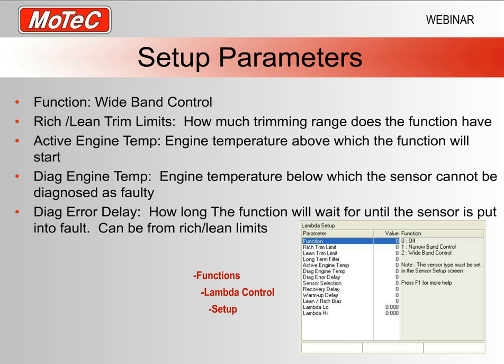The active engine temperature parameter basically says: if the engine is cold or warming up, we don't want this function to start — that's what the engine temperature compensations are for. One exception: you might want to use wideband lambda while the engine's warming up, in which case you'd have engine temperature in your compensation table to keep track of the lambdas you want as the engine warms up.